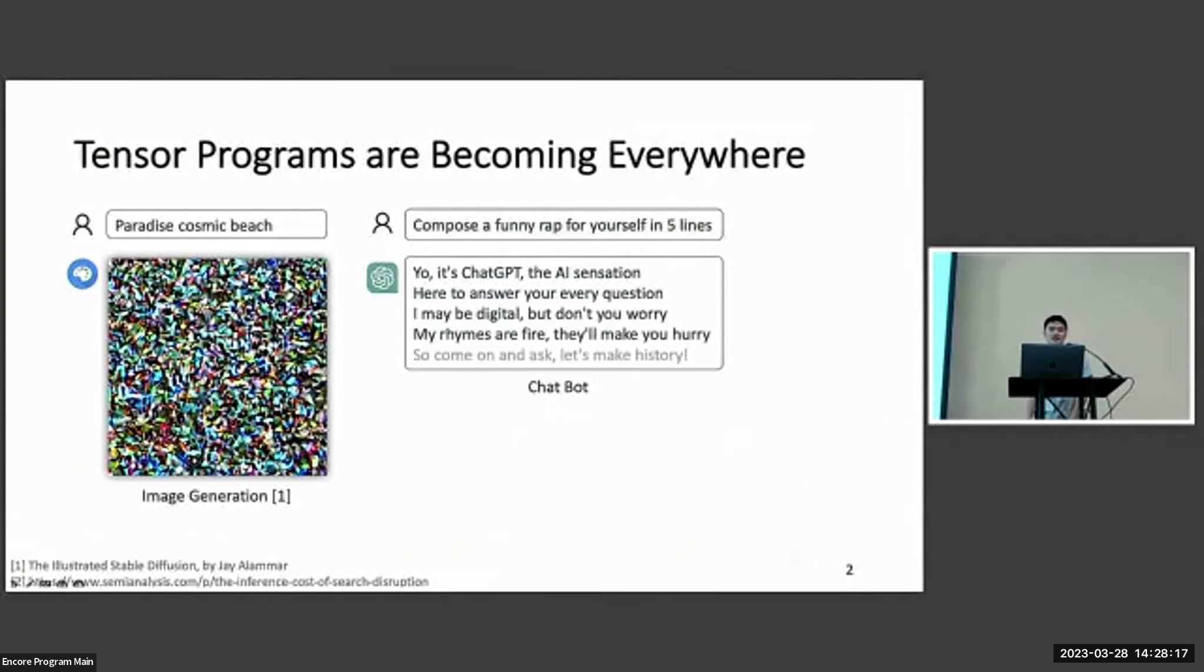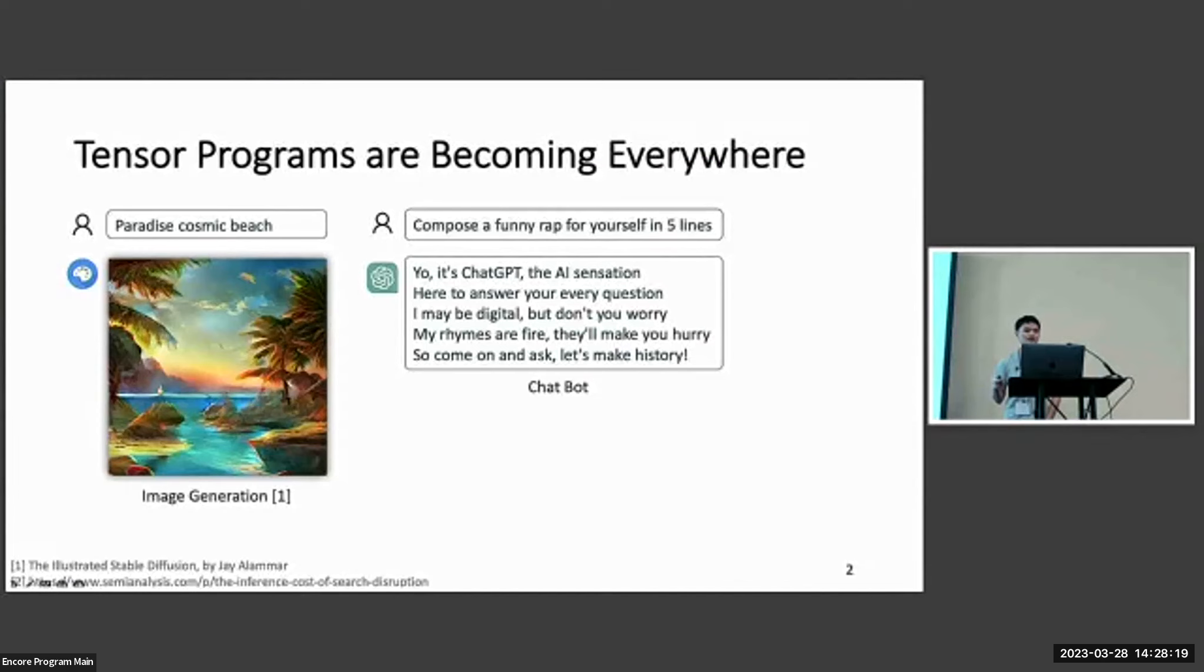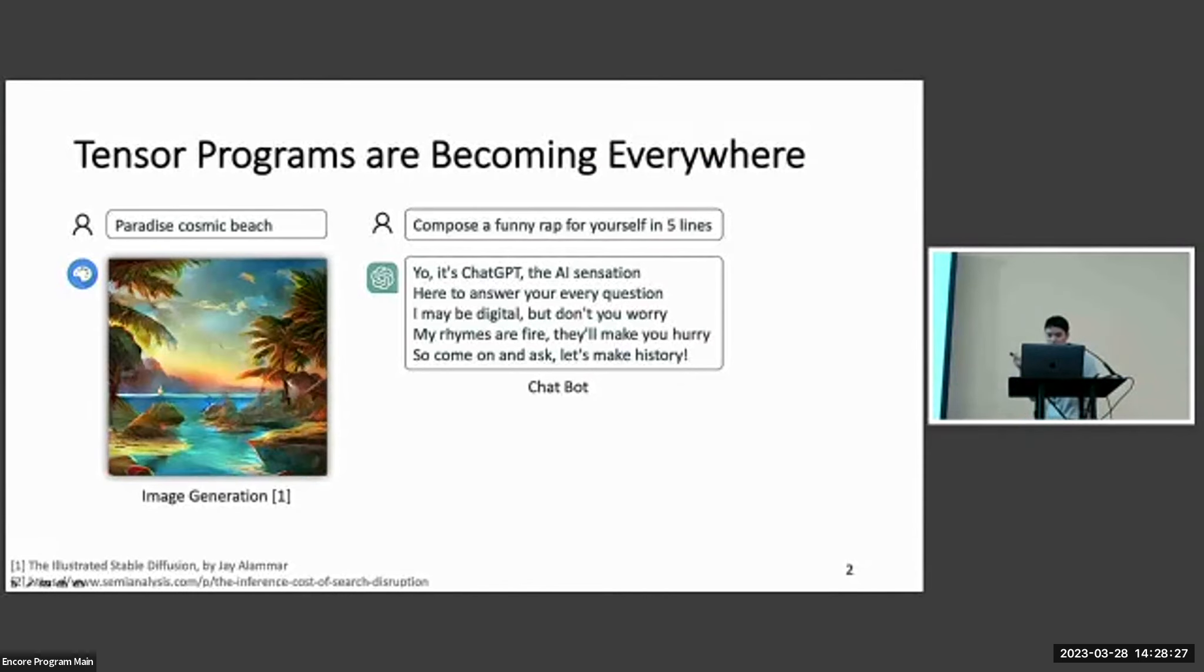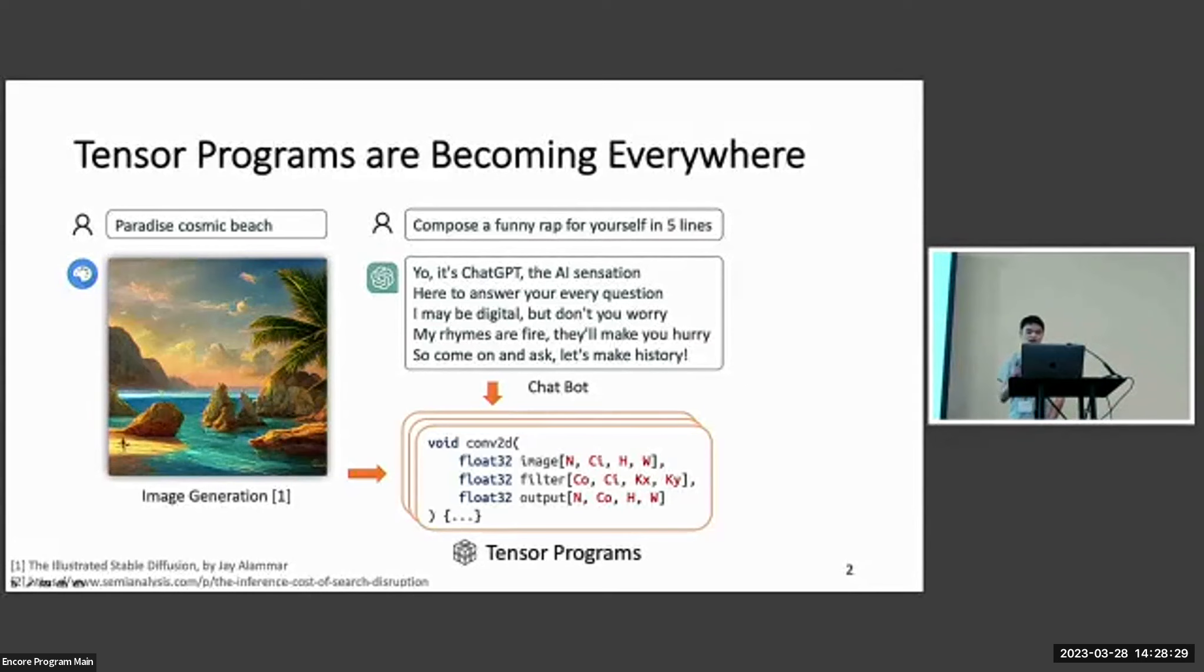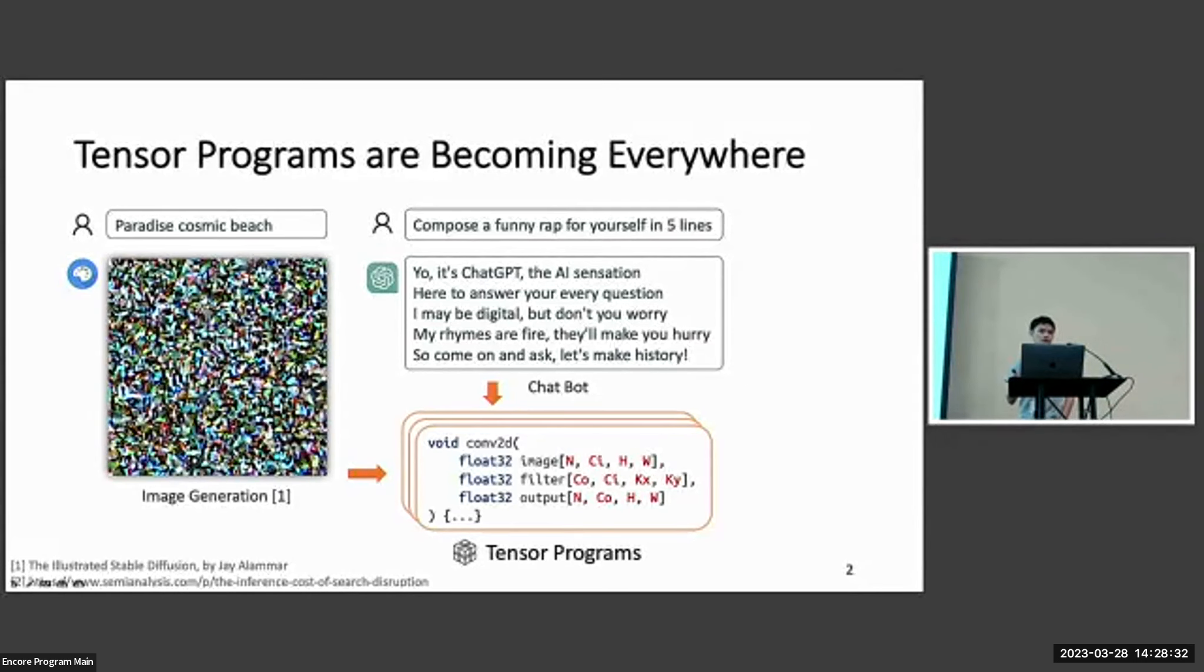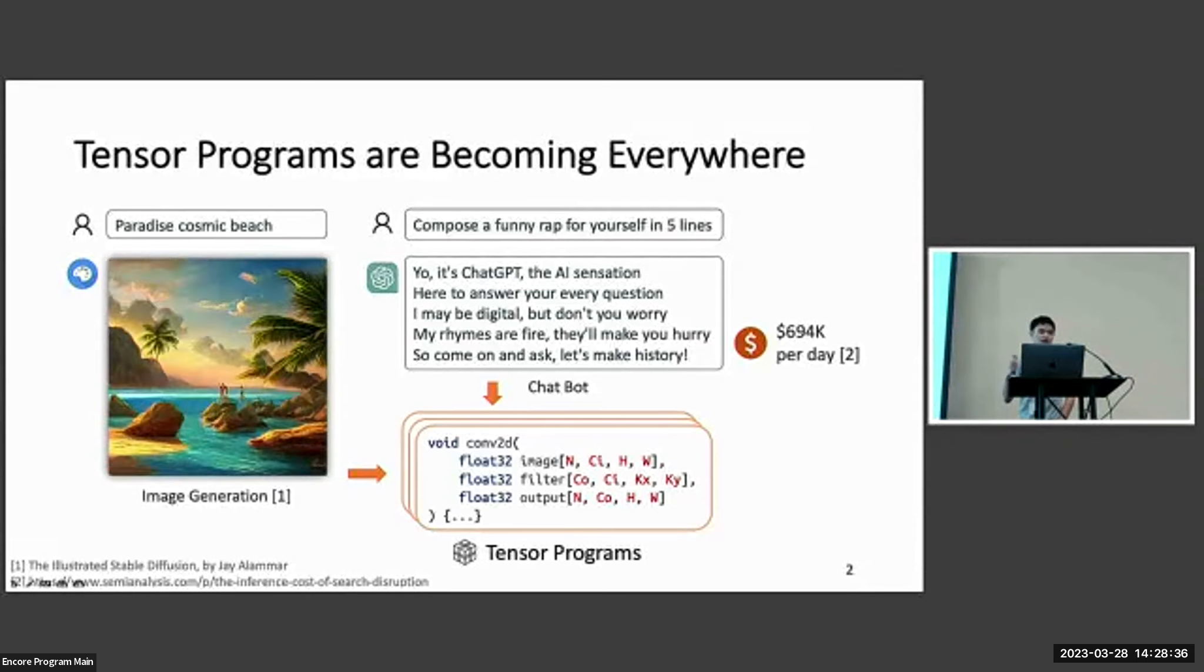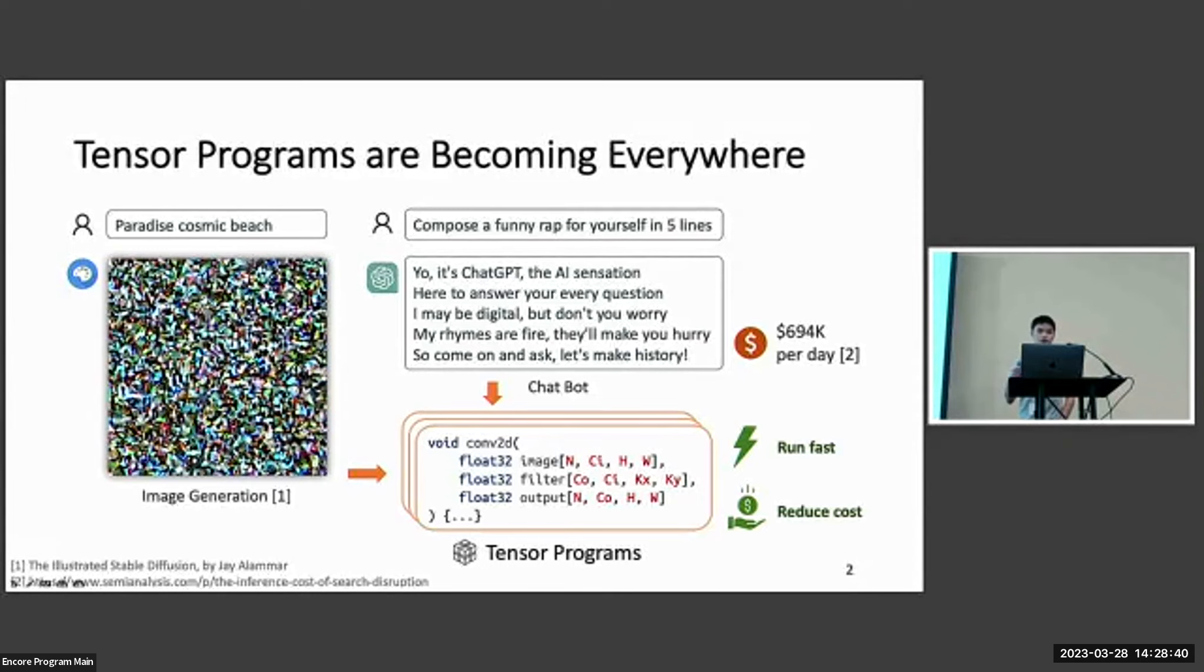Now deep learning has greatly changed our life. For example, we can draw a stunning image with a simple description or chat with a chatbot in our daily language with ChatGPT. At each run of these applications, there will be a bunch of tensor programs that will be executed under the hood. However, it's very expensive to run these applications, so it's very important to run them fast and to reduce the cost.